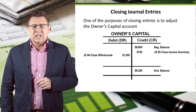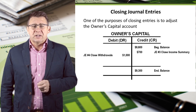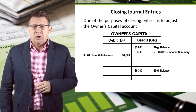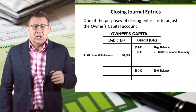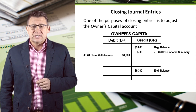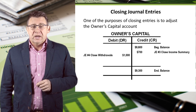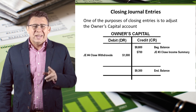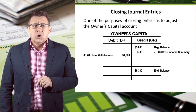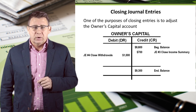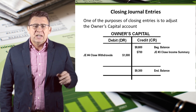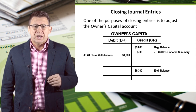Now let's look at the owner's capital account. We started with a credit balance of $9,600, which came from the trial balance. We increased the account when we closed income summary — recall that net income increases equity, and this is the journal entry that made that happen. We decreased the account when we closed owner's withdrawals — recall that owner's withdrawals decrease equity, and this is the journal entry that made that happen. Finally, we have an ending balance of a $9,300 credit balance.